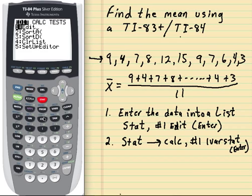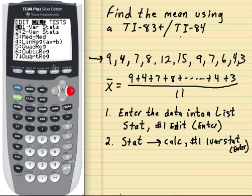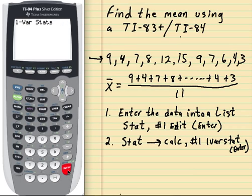So let's go ahead and do that. I hit the stat button, the calc. So I need to arrow over to the calc. And I want to hit on the number 1, 1 variable statistics. So this is blinking here. So you have to be a little careful.